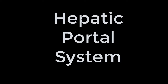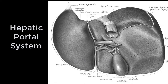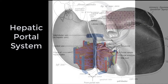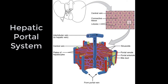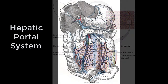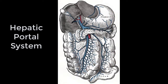Starting with the hepatic portal system. The hepatic portal system is a network of veins that drain blood to the liver. This means that blood drains from one capillary bed to the capillary bed of the liver before returning to the heart. The veins of the hepatic portal system are mostly veins that drain organs of the GI tract.